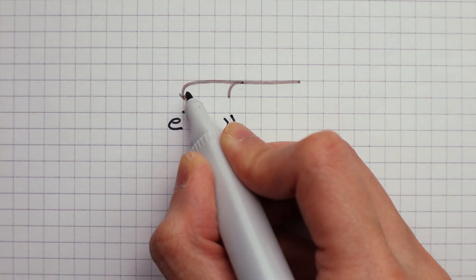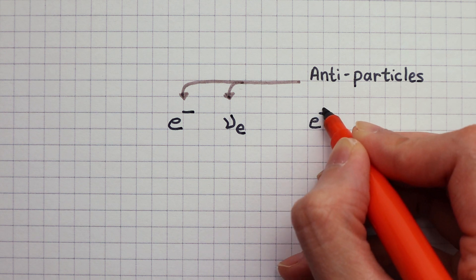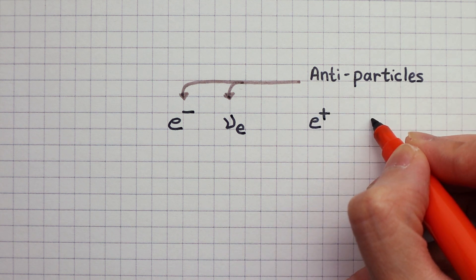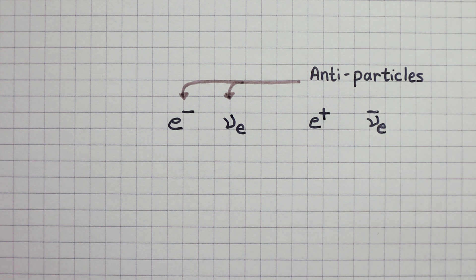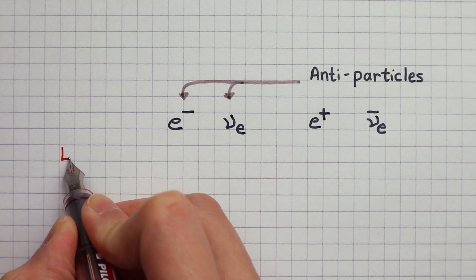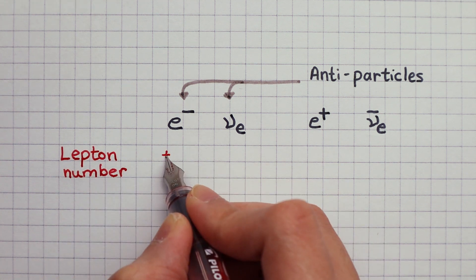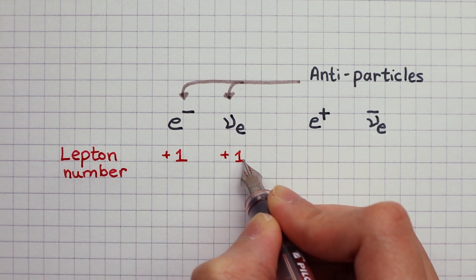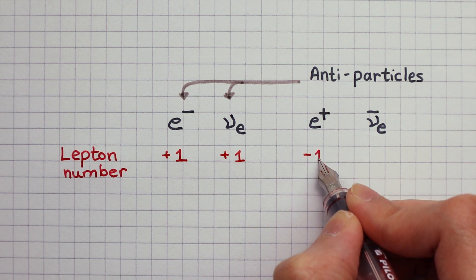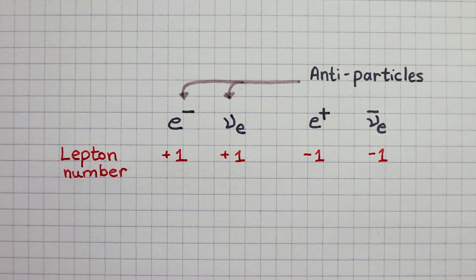Each lepton has its antiparticle. The antielectron is denoted with the opposite charge, and the antielectron neutrino has a bar above it. Each lepton is assigned with what's called a lepton number. If a particle is a lepton, then it has a lepton number of plus one. If it's an antiparticle of a lepton, then the lepton number is minus one.